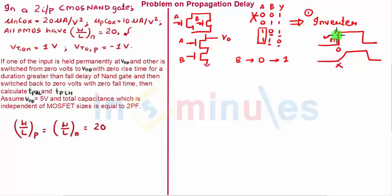For a duration greater than fall delay of the NAND gate, currently let's not pay attention to that part. And then switch back to zero volts with zero fall time. So it goes back to zero volts from one to zero with zero fall time. Then calculate propagation delay high to low and propagation delay low to high is what they are asking us.